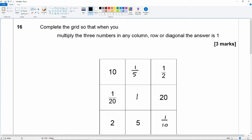Okay so the rows are right. Let's check the columns. 10 times 2 is 20 divided by 20 is 1. Yep 1 fifth times 5 is 1 times 1 is 1. 1 half times 20 is 10 times 1 10th. That's also correct.